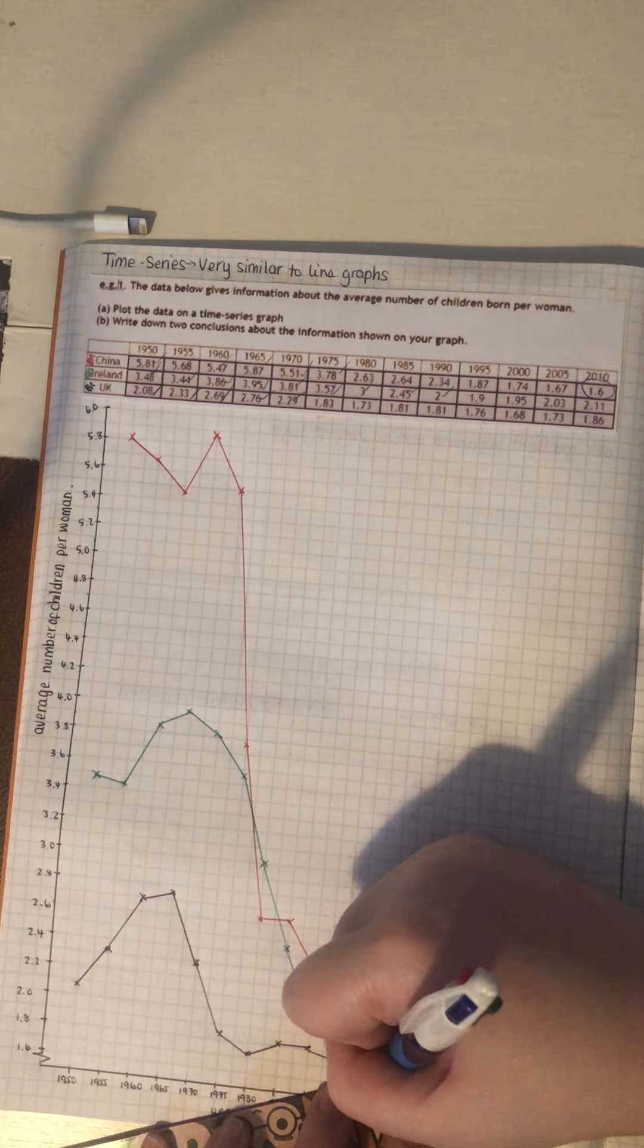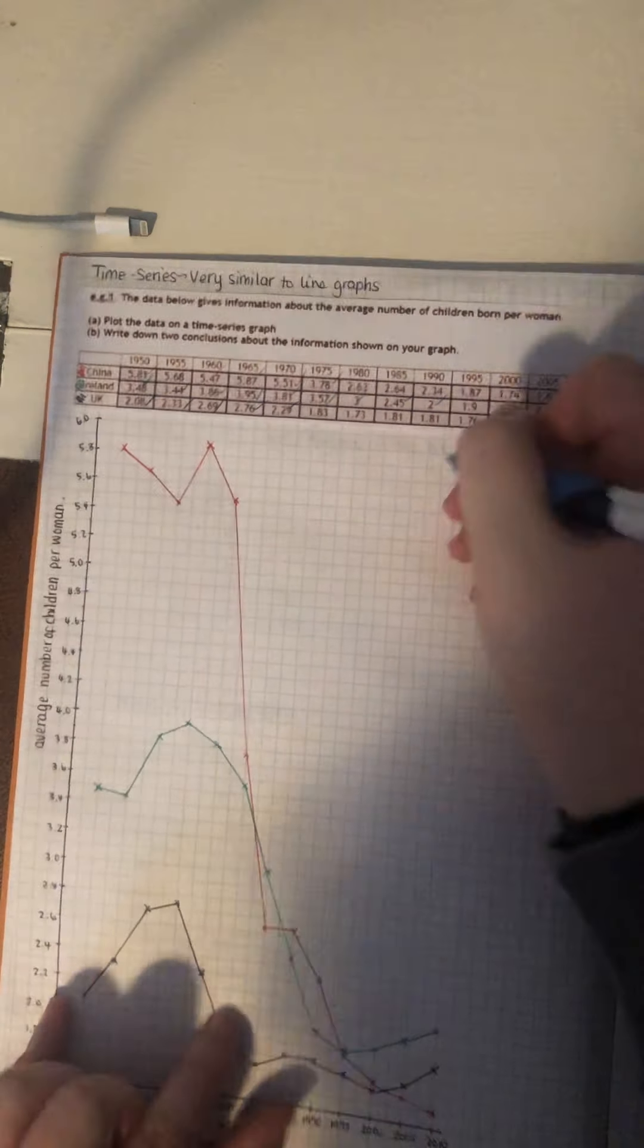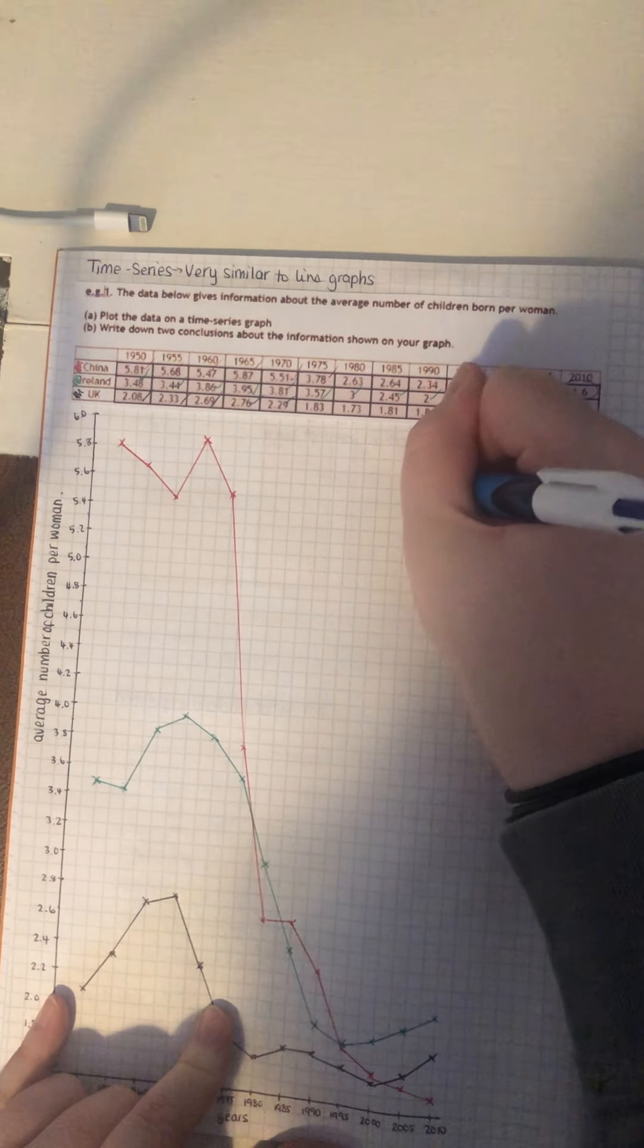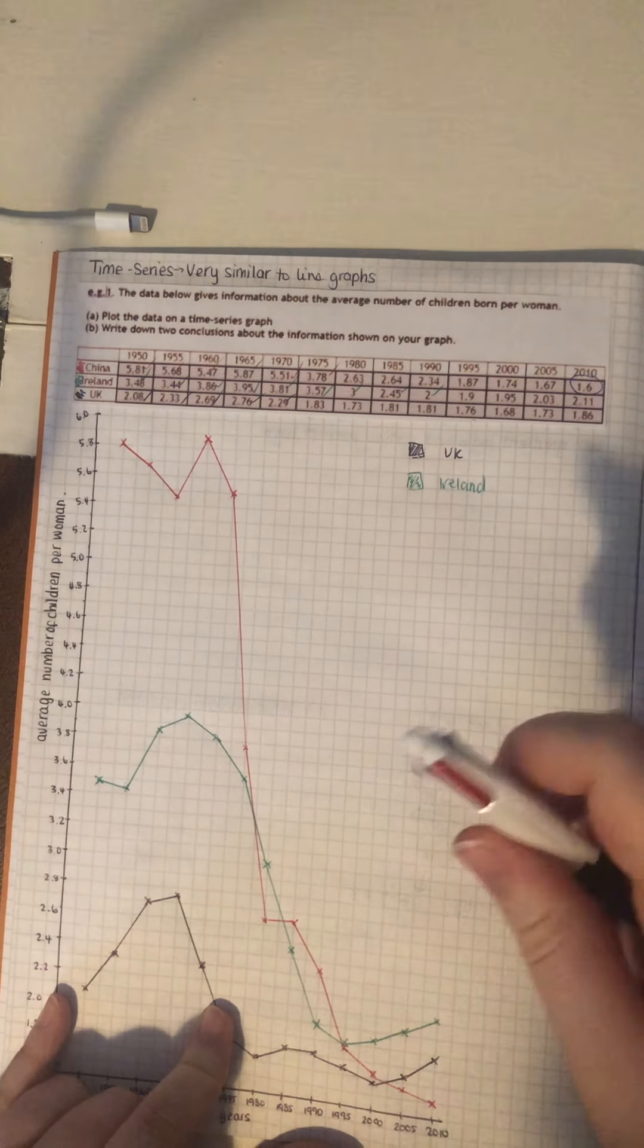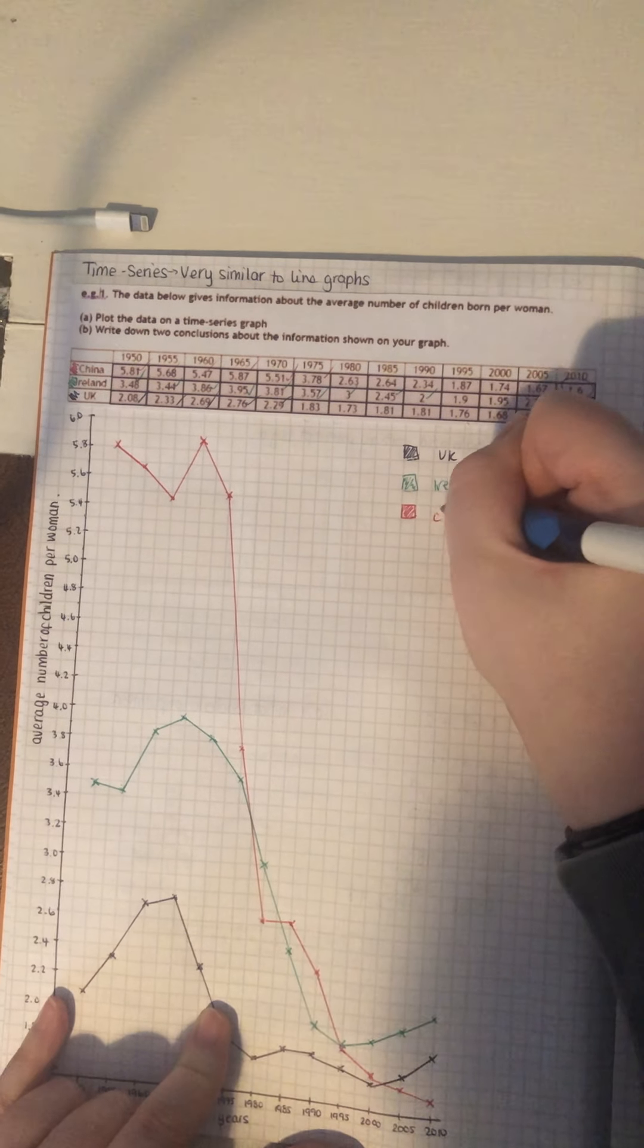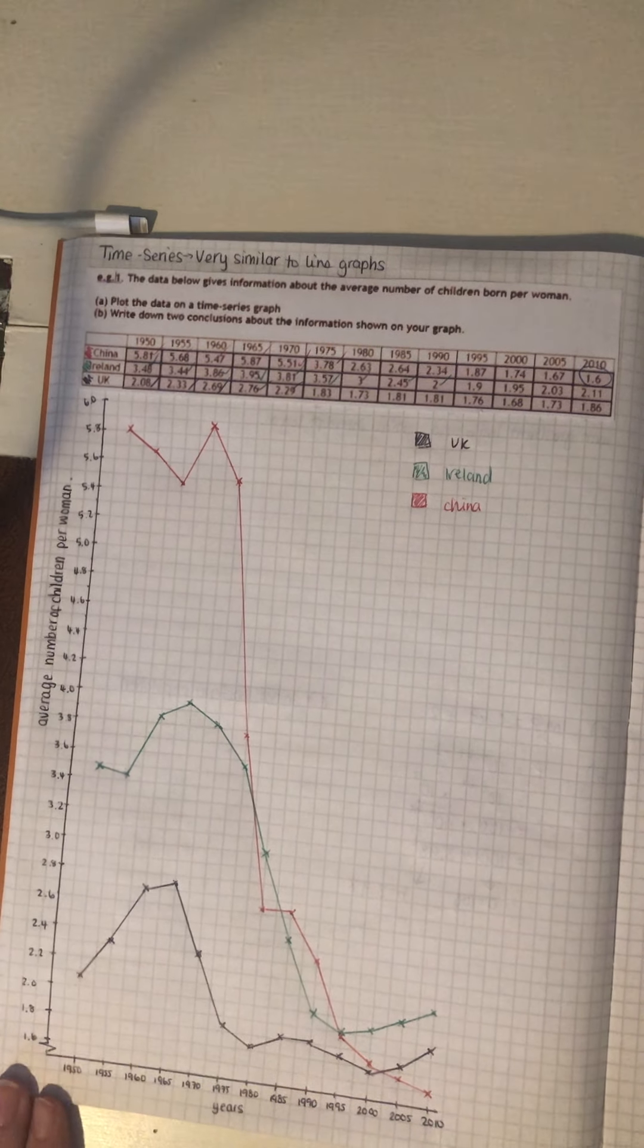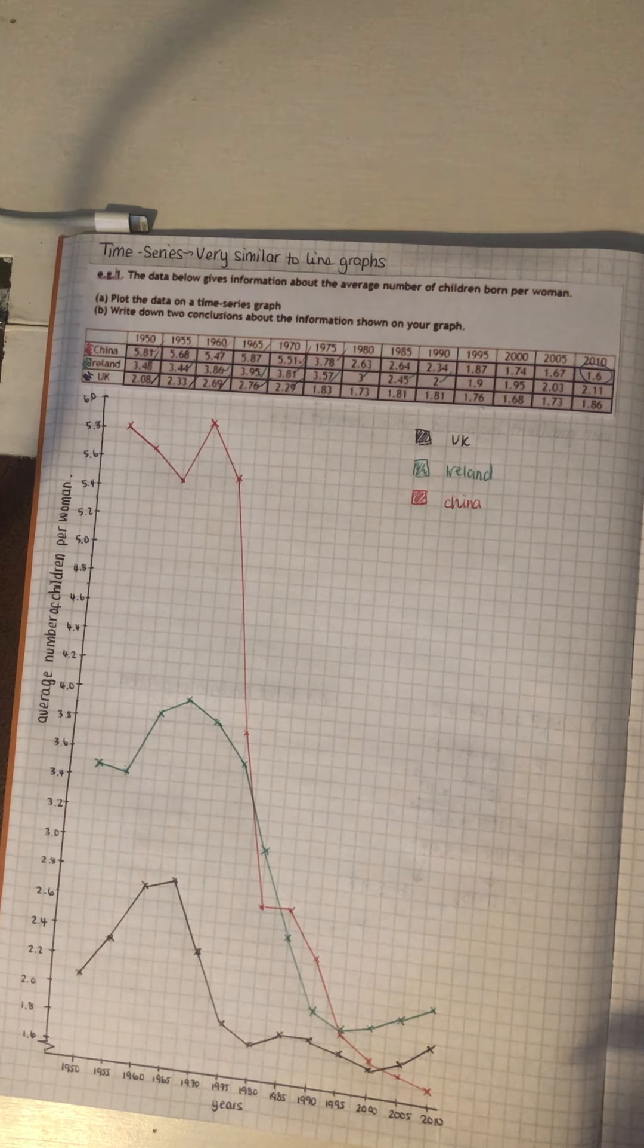So, once you've done this bit, this is sort of the final bit done. I am going to add a key at the top. So, if you just sort of do a little box, color it in and then say which country it will be. So, that's my UK. This is my Ireland. And this is China. Now, part B. We've got to come with two conclusions of the graph. So, that just means what is it showing us, and maybe the reasons why it has happened like that.